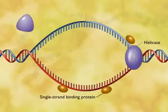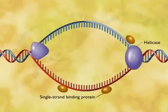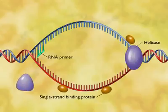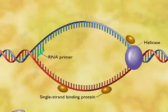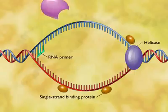Therefore, replication begins as an enzyme called primase assembles an RNA primer at the origin of replication site. The RNA primer consists of a short sequence of RNA nucleotides, complementary to a small initial section of the DNA strand being prepared for replication.